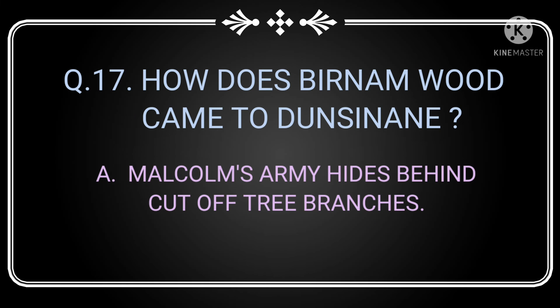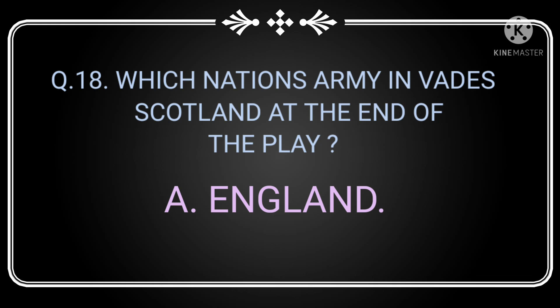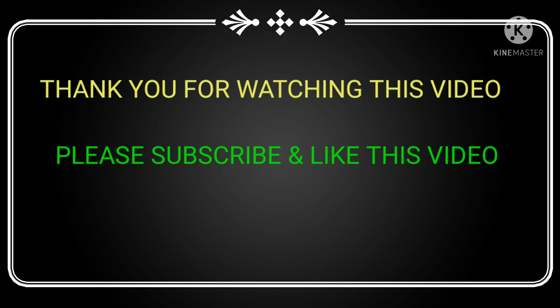Question number 17: How does Birnam Wood come to Dunsinane? The answer is Malcolm's army hides behind cut-off tree branches. Question number 18: Which nation's army invaded Scotland at the end of the play? The answer is England.